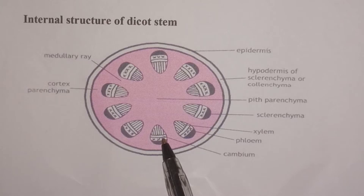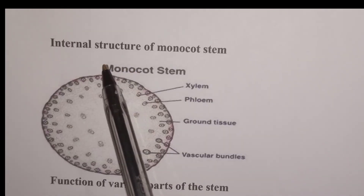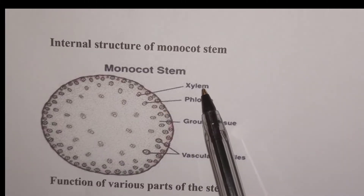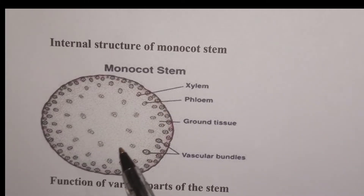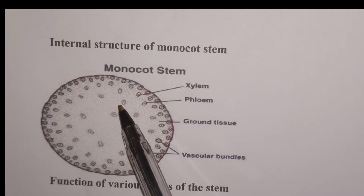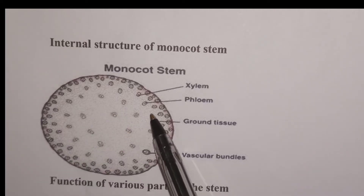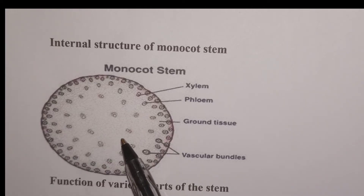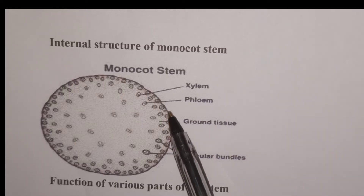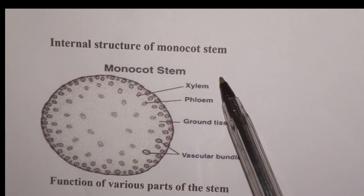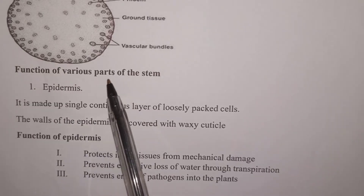Here we have the internal structure of the monocot stem. In a monocot stem, the vascular bundle is scattered all over in the ground tissue of the stem, unlike the dicot stem where the xylem and phloem are arranged in a ring separated by the cambium ring. The monocot stem has similar other structures to the dicot stem, except that it lacks the pith.